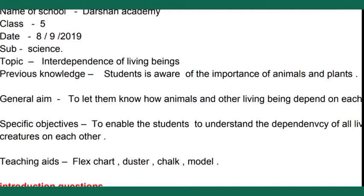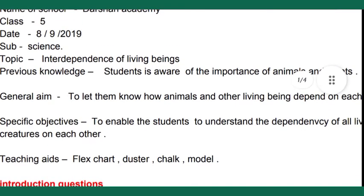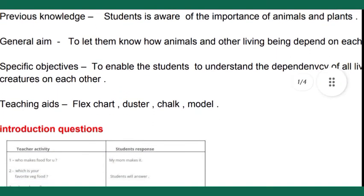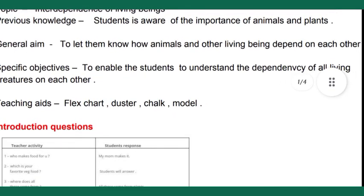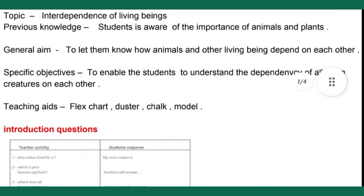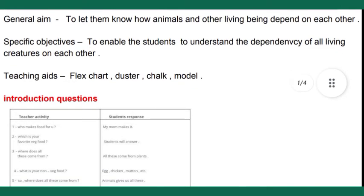For 'Previous Knowledge,' we write what the student is already aware of — in this case, the importance of animals and plants. For 'General Aim,' we write what we want to teach students — to let them know how animals and other living beings depend on each other, specifically how plants, animals, and human beings are interdependent. The specific objective is to enable students to understand the dependency of all living creatures on each other.